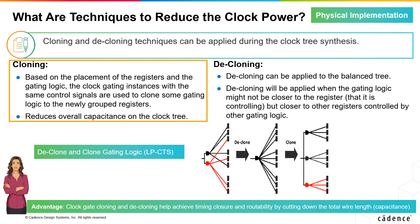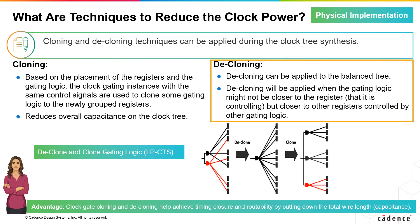During cloning, you create a new group of registers with the same control signals, which helps to reduce overall capacitance on the clock tree. Cloning can be applied to the balanced tree and is implemented when the gating logic might not be closer to the register but closer to other registers controlled by the gating logic. Hence, clock gate cloning helps achieve timing results and routability by cutting down the total wire length, and therefore the capacitance.